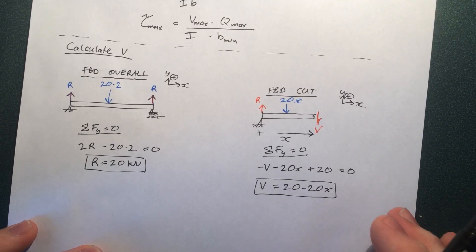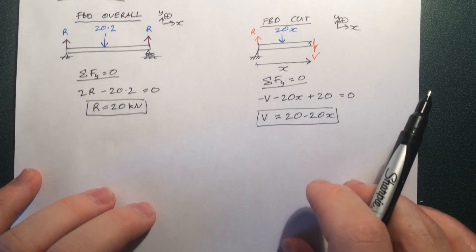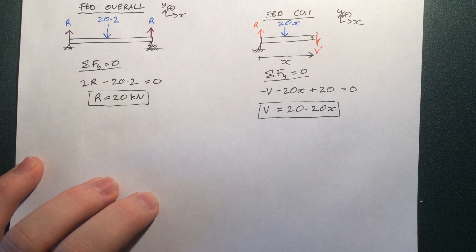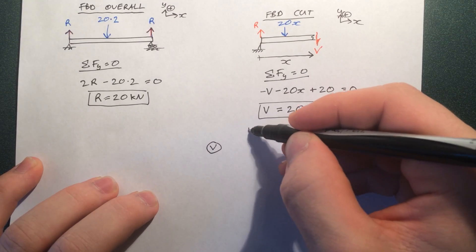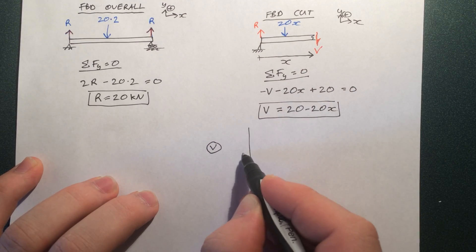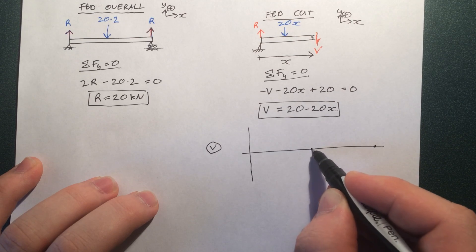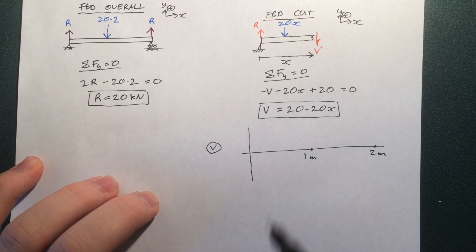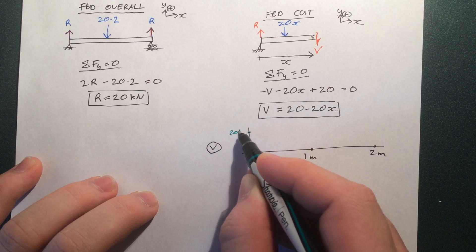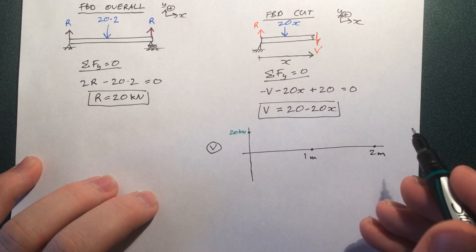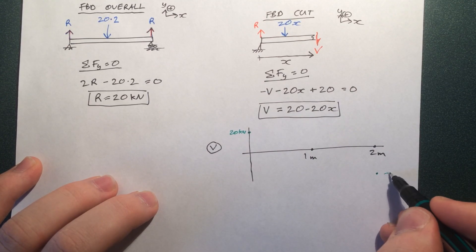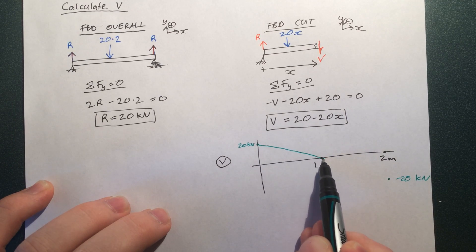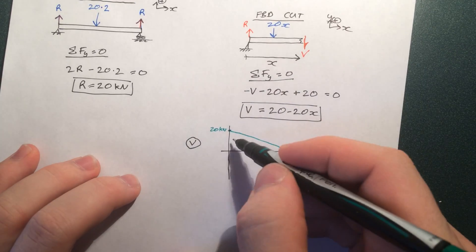Now, this is V at any point along the beam. So, in order to find the maximum, it's always helpful just to make a sketch. In this case, you could probably figure it out without a sketch. But, in more complicated examples, make a sketch of your shear force and find a maximum. So, this is 2 meters, 1 meter. When x is 0, we have 20 kilonewtons. Or, when x is 2, we have a negative 20 kilonewtons. And, it's linear, so we connect the lines. It's 0 when x equals 1.